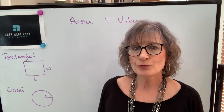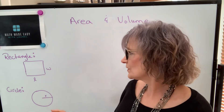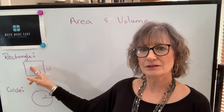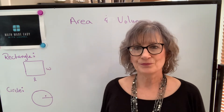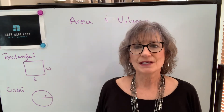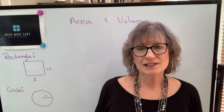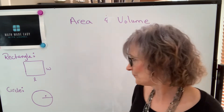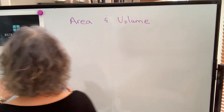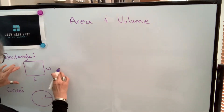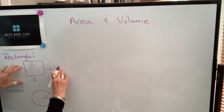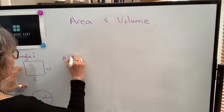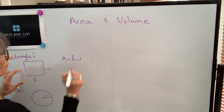Two of the most common formulas that you're going to be dealing with are area of a rectangle and area of a circle. Let's do an example of each of those and talk about how those formulas work. For a rectangle, the area is simply length times width.